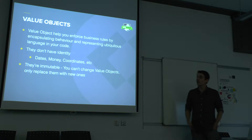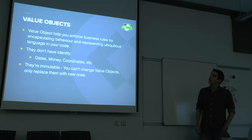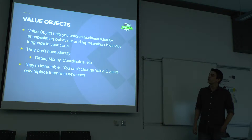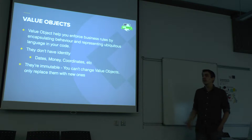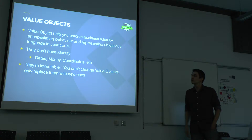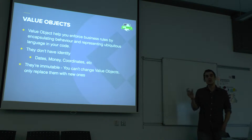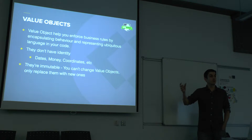Value objects are part of the DDD domain. They help you enforce your business rules by encapsulating behaviour and representing the ubiquitous language you've developed in your code. They don't have an identity — so for example they might be dates, money, coordinates — and they're immutable. You don't change a value object's value; you replace the value object completely, creating what you want.